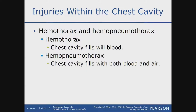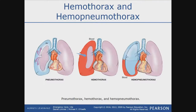Hemothorax — we talked about this already. To use some more visuals: this right here represents a pneumothorax, meaning there's only air causing the pressure to collapse this lung. This would be a hemothorax — the red represents blood causing the collapse and pressure on the lung. And the last one is a hemopneumothorax, meaning blood and air in the thoracic cavity — a combination of both.